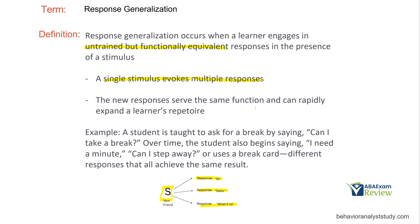These new responses serve the same function and can rapidly expand a learner's repertoire. For instance, we teach a student to ask for a break by saying 'can I take a break?' Often what happens is the student only ever says that exact phrase like a robot. We don't want rote responses — we want that to expand. So the student might also start saying 'I need a minute,' 'can I step away,' or use a break card. The stimulus is needing a break, and all these responses have generalized and all achieve the same result.